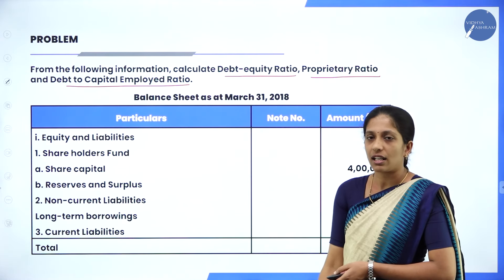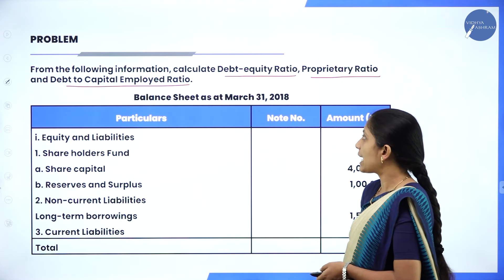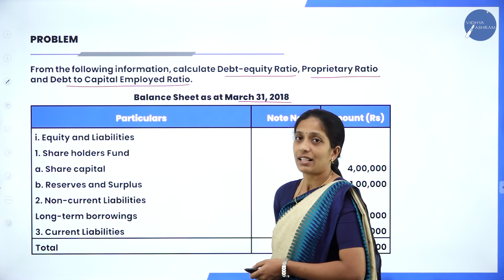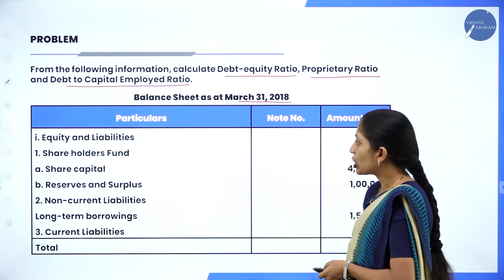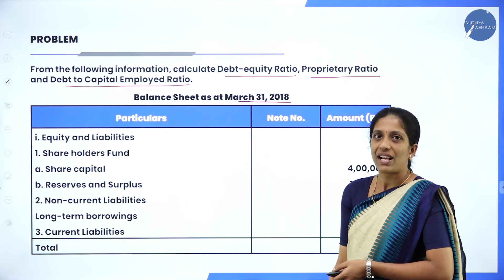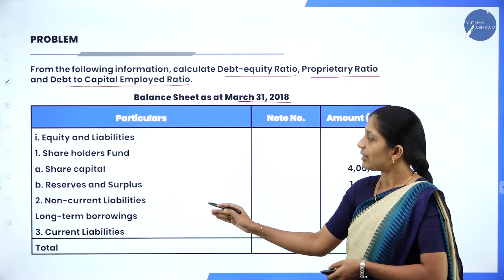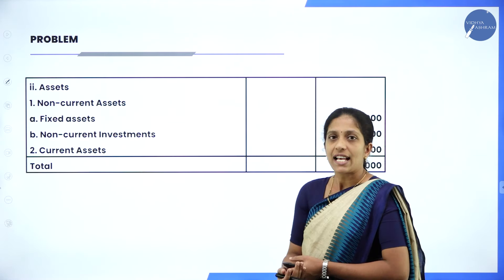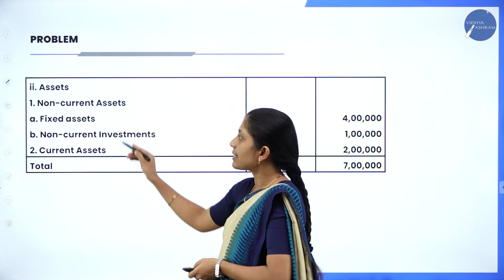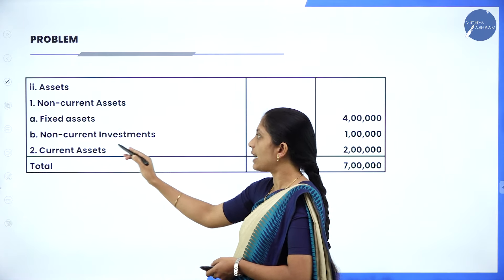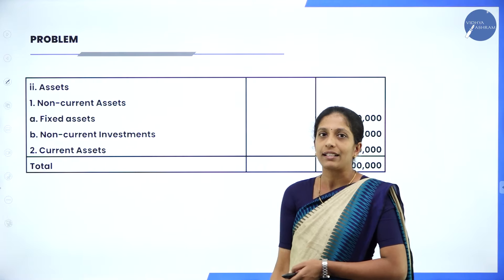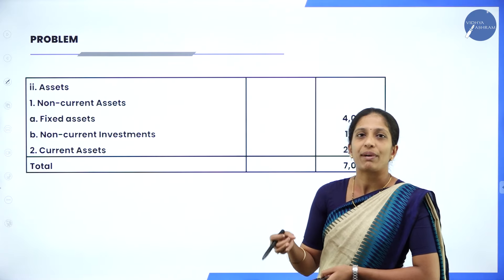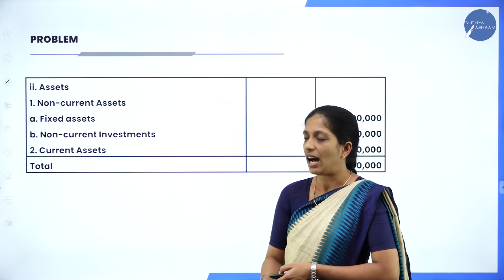A balance sheet as at 31st March 2018 has been given with equity and liabilities side showing: shareholders fund (share capital and reserves and surplus), non-current liabilities (long term borrowings), and current liabilities. The assets side shows non-current assets (fixed assets and non-current investments) and current assets.